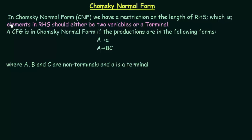First let's see what is Chomsky Normal Form. In Chomsky Normal Form, which we will call CNF, we have a restriction on the length of RHS, which is: elements in RHS should either be two variables or a terminal. So in Chomsky Normal Form, elements in the RHS should either be two variables, two non-terminal symbols, or a single terminal symbol.